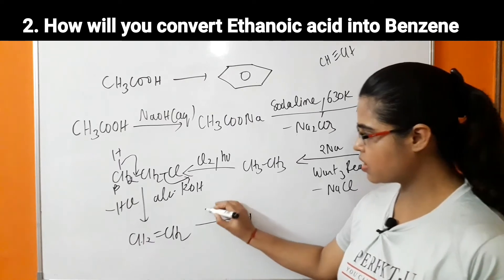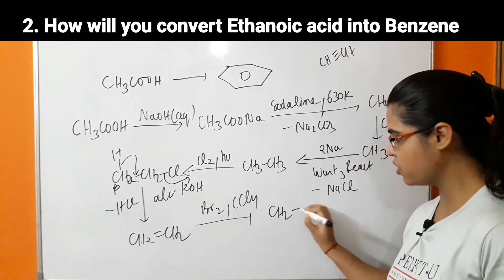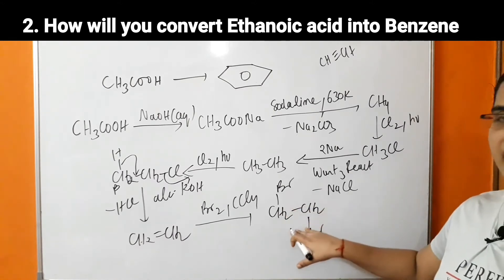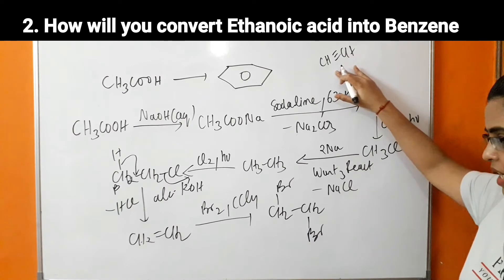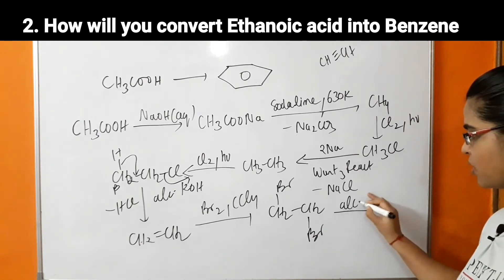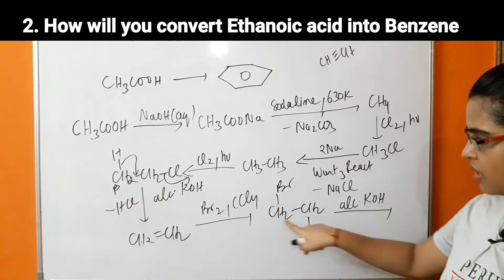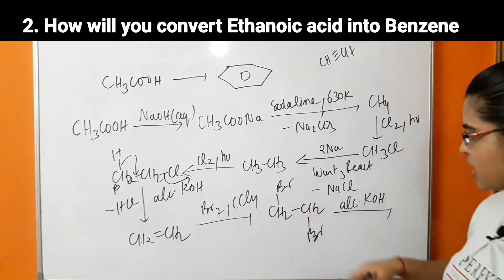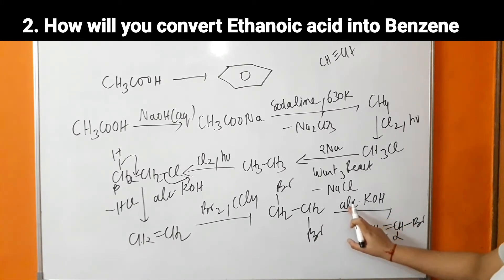Then further we can form acetylene from ethene. Ethene easily gives addition reactions. If we react it with Br₂ in the presence of CCl₄, there will be formation of CH₂BrCH₂Br — a dihalogenated compound. Then two rounds of dehydrohalogenation will be done on this compound to form acetylene. For dehydrohalogenation, alcoholic KOH is used. The halogen at the alpha carbon and the hydrogen of the beta carbon are removed, forming vinyl bromide (CH₂=CHBr).